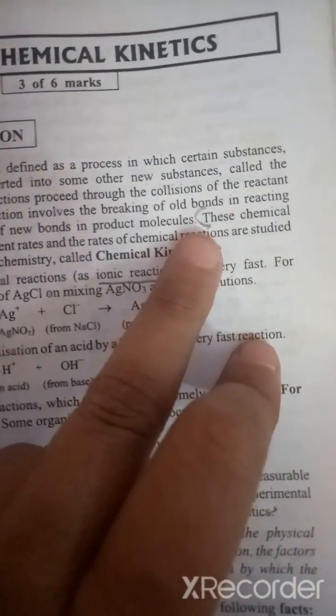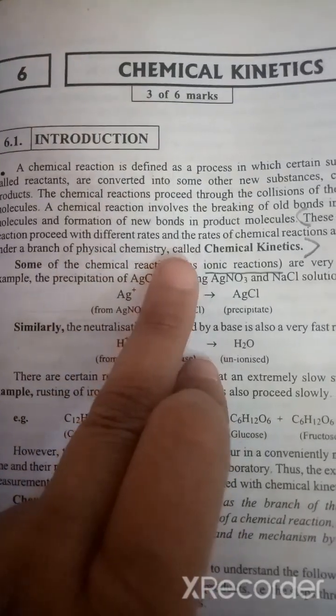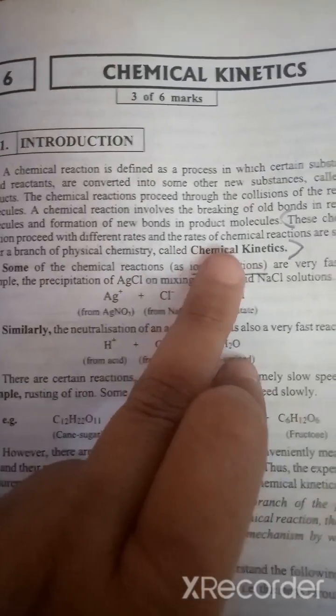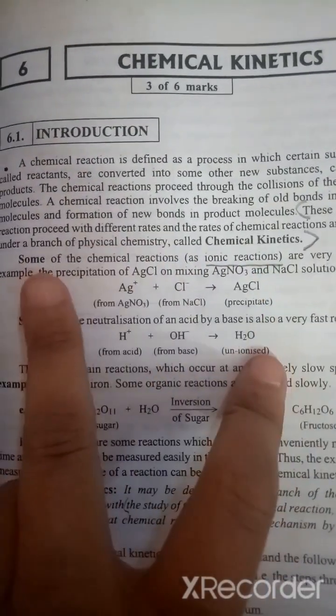The most important definition is that these chemical reactions proceed with different rates and the rates of chemical reactions are studied under the branch of physical chemistry, which is called chemical kinetics.